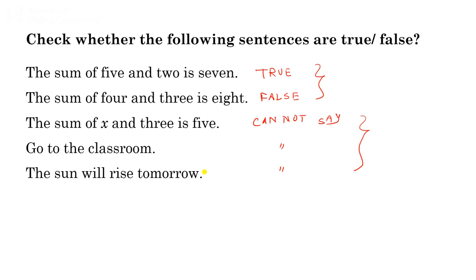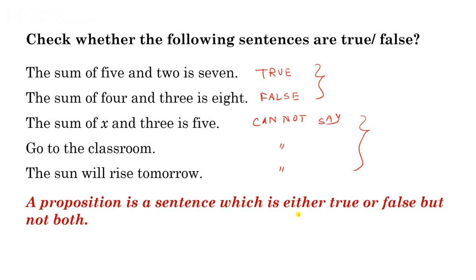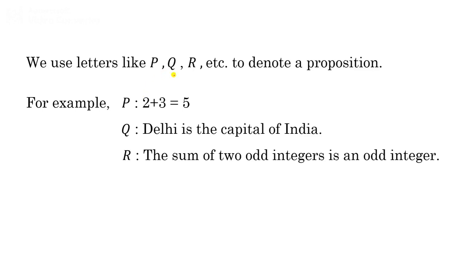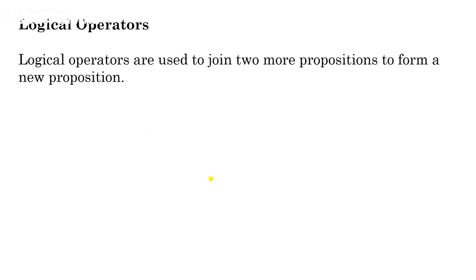We are now in a position to define a proposition. A proposition is a sentence which is either true or false, but not both. So the first two sentences are propositions, while the last three are not propositions. We use letters like p, q, r to denote propositions. For example: p: '2 + 3 = 5'; q: 'Delhi is the capital of India'; r: 'The sum of two odd integers is an odd integer.'